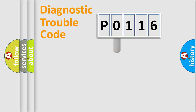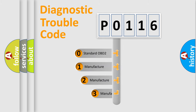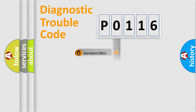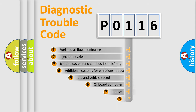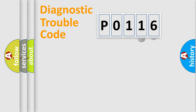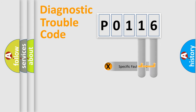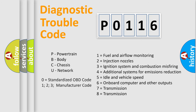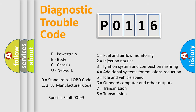This distribution is defined in the first character of the code. If the second character is expressed as zero, it is a standardized error. In the case of numbers 1, 2, or 3, it is a more specific car-manufacturer error. The third character specifies a subset of errors. The distribution shown is valid only for the standardized DTC code, and only the last two characters define the specific fault of the group. This division is valid only if the second character code is expressed by the number zero.